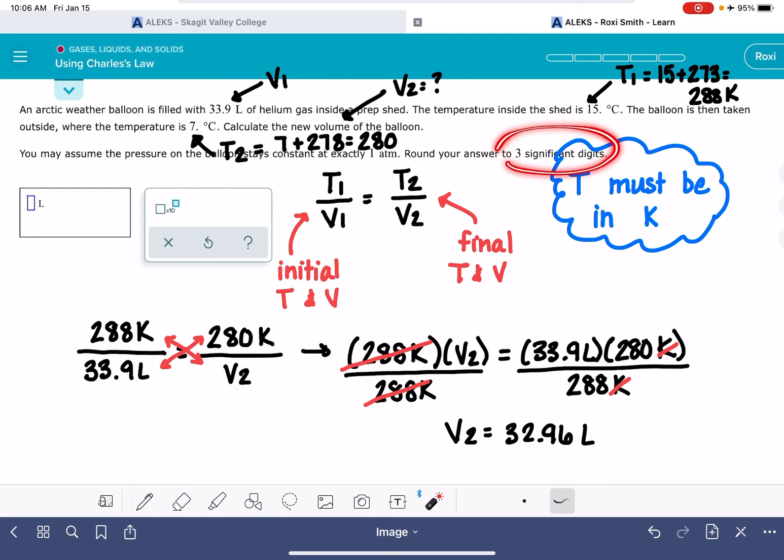Alex wants this answer to 3 sig figs. So that's going to be 33.0. And the last thing that we should do is just double check, because sometimes Alex is tricky. Double check that the unit that we're getting from this problem is consistent with the unit that it's asking for.